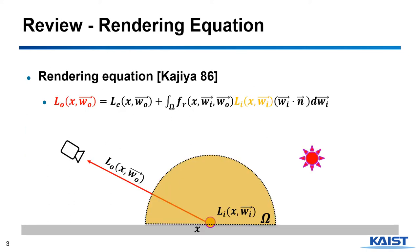If you have followed the class, you will now be very familiar with this rendering equation. This equation means that the outgoing radiance of a certain direction is achieved by integrating the interaction between the incoming ray and the surface from all directions of the hemisphere. However, the integration is too complex and cannot be solved analytically.